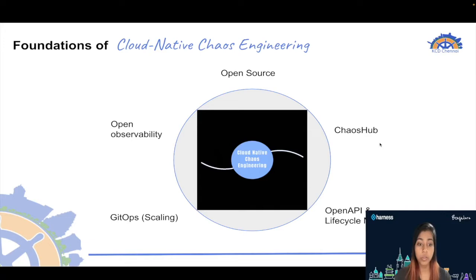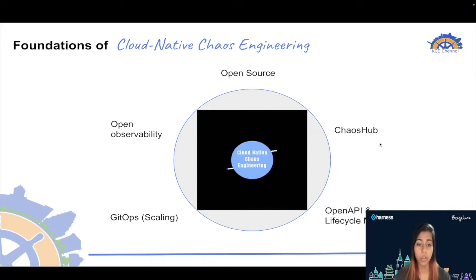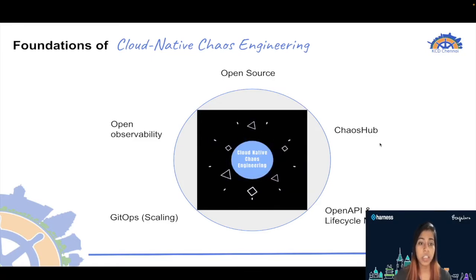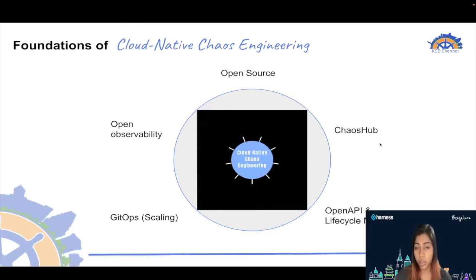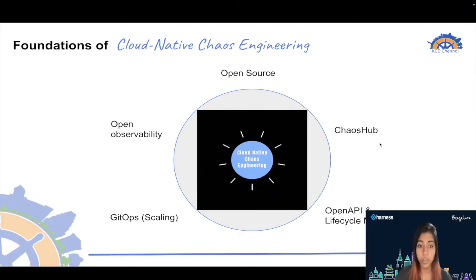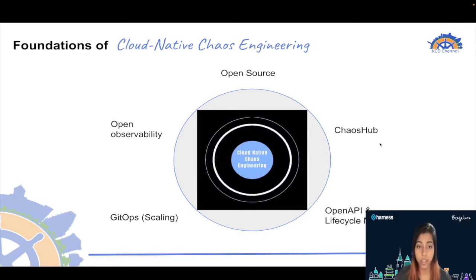That GitOps section is what we'll be talking about in detail and demonstrating. Lastly, there's open observability, which is also one of the principles — introduction to chaos engineering should not require any new observability system; the existing ones should fit in perfectly.